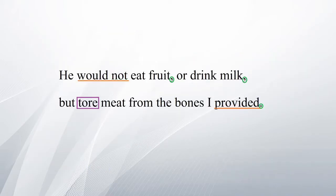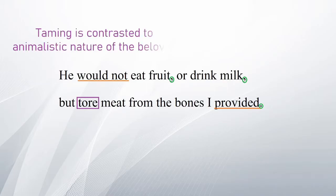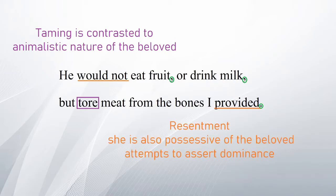'He would not eat fruit or drink milk, but tore meat from the bones I provided.' This small stanza gives a glimpse of the persona trying to tame the beloved, contrasted with the animalistic nature of the beloved through the verb 'tore'. You can also see a sense of resentment when the persona mentions 'I provided', hinting that she is possessive of the beloved and wants to change him, perhaps asserting dominance over him.